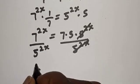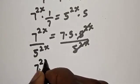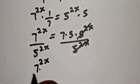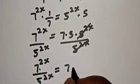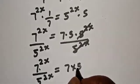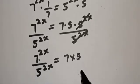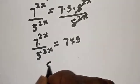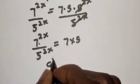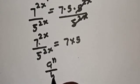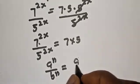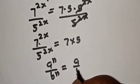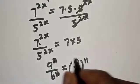We have 7 raised to power 2s over 5 raised to power 2s equal to 7 times 5. Take note of this rule: if you have a raised to power n over b raised to power n, this is equal to a over b raised to power n.